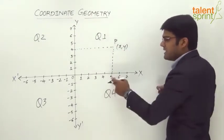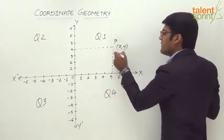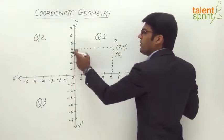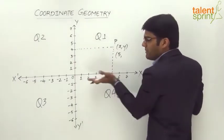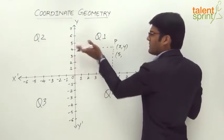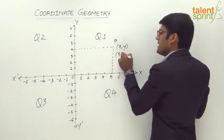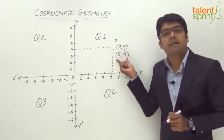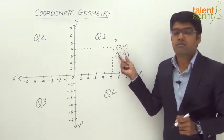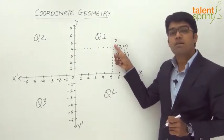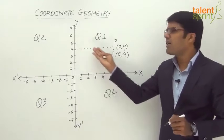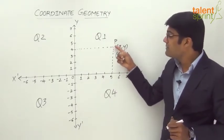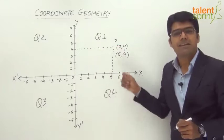From 0 it is up to 5, so x equals 5. Whereas the vertical distance of point P is 4 — the vertical distance of point P from the x-axis is 4, so y becomes 4. So we can say that the point P is described by the ordered pair (5, 4), where 5 is the distance from the y-axis (the horizontal distance) and 4 is the distance from the x-axis (the vertical distance).